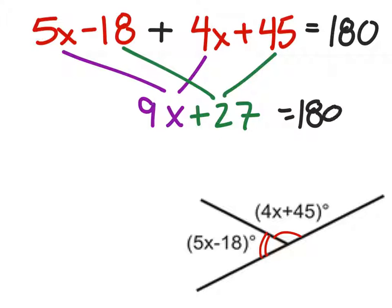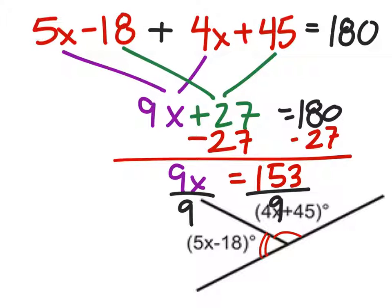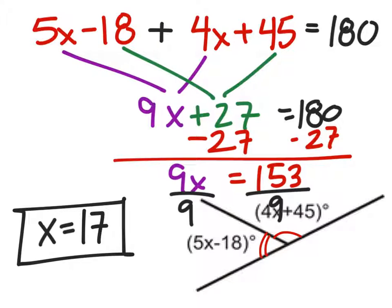Next we need the X's to be alone, so we'll subtract 27 from both sides and we get 9x equals 153. Finally, to solve for X we divide both sides by 9 and we get X equals 17. Now this is not degrees, so if you label it as degrees that is wrong — it only represents a value within the degrees, so X is just 17.